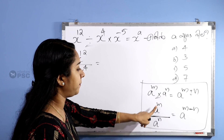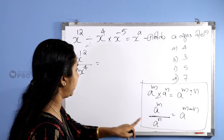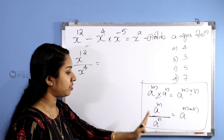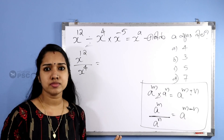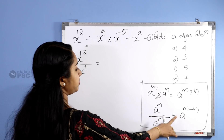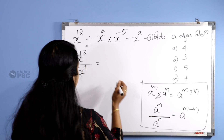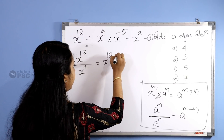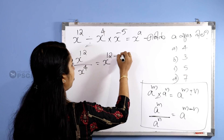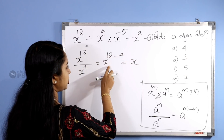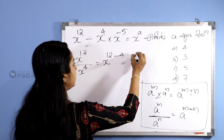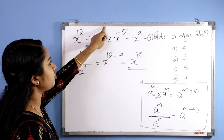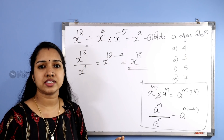The rule is: a raised to m by a raised to n, where a is the same base, equals a raised to m minus n. So x raised to 12 divided by x raised to 4 gives x raised to 12 minus 4, which is x raised to 8.